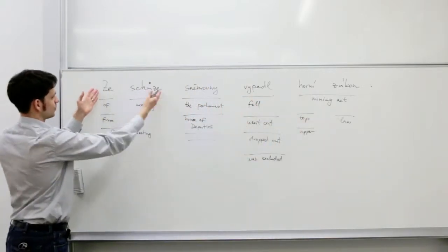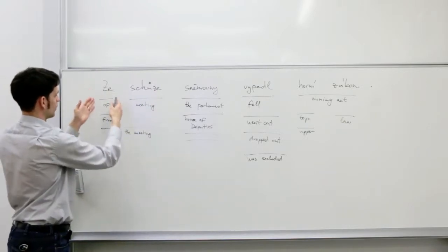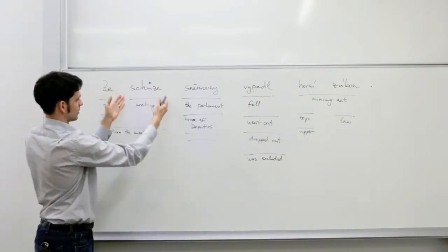So for example, this very beginning, ze schůze, can be translated word-for-word as of or from. Schůze as meeting. Or these two words can be translated at once as from the meeting.